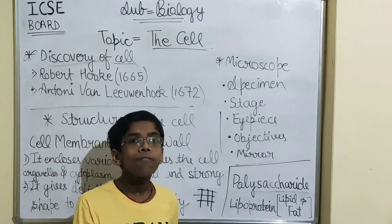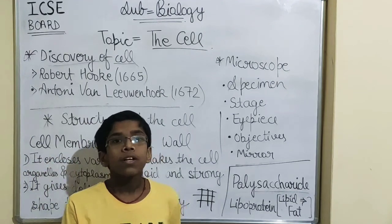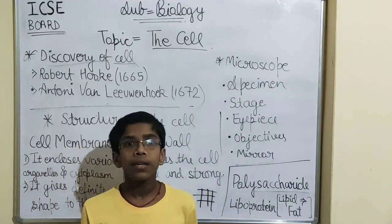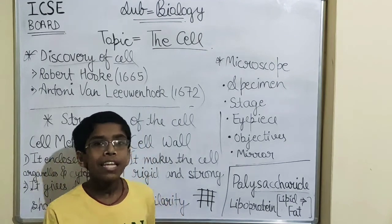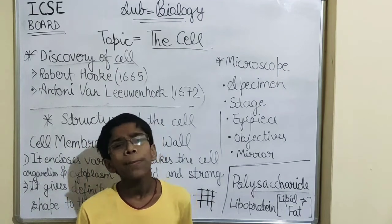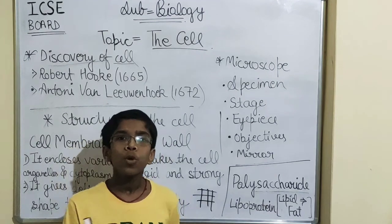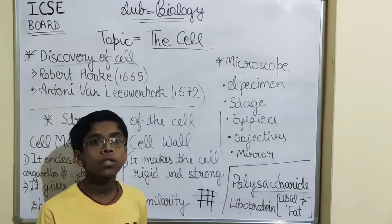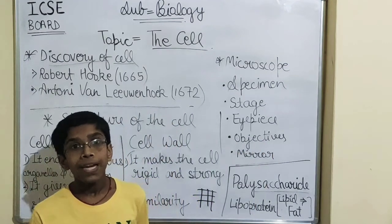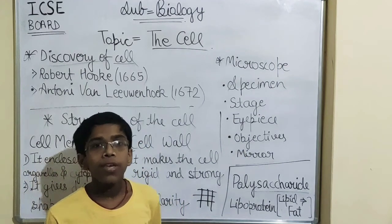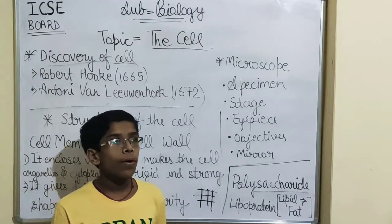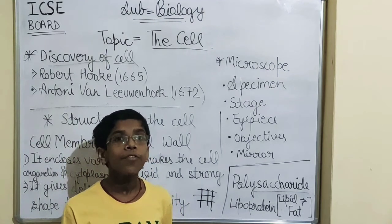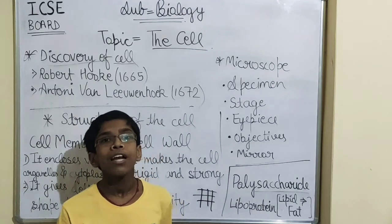We can see the contents of the cell more clearly with the dye. Then you have to cover it with a cover slip. A cover slip is a thin glass used to protect our specimen. The specimen is the object we are viewing through the eyepiece, and the specimen is kept on the stage. Then we have to see it through the high power of the microscope so that we can see it more clearly.